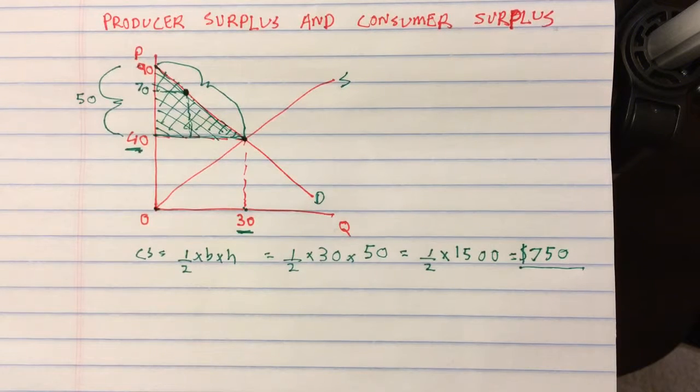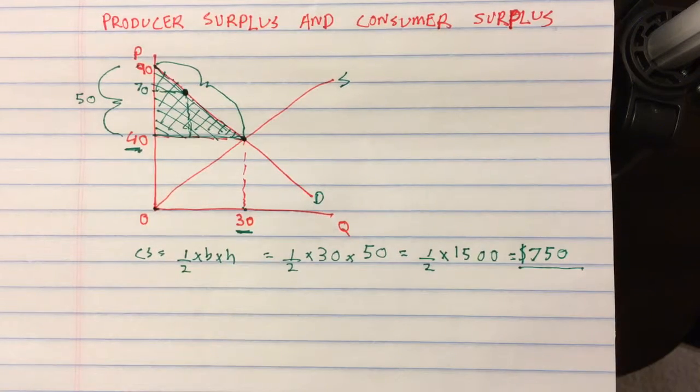Now, if I want to look at producer surplus, that is, I want to know how much the producers gain in the market, producer surplus is basically the profit earned by all the firms in the industry.